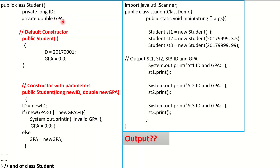If you need values, then you can use a constructor with parameters. Again, you should say public, no return type, the name of the class, but you have parameters. So for example, you need a value for ID and another value for GPA. So I will say long newID, double newGPA. Just like in the set method, we say ID equals newID. But when it comes to the GPA, because we know GPA should have a valid value between zero and four, I will have an if condition. If newGPA is below zero or newGPA is greater than four, then I will say invalid GPA and GPA should be reset to zero. Otherwise, GPA equals newGPA.